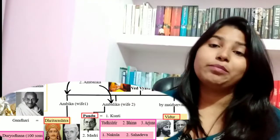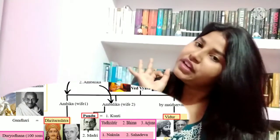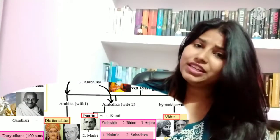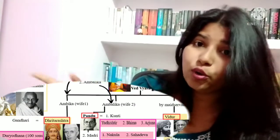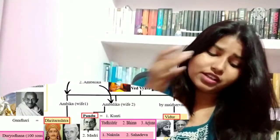Pandu — that is Subhash Chandra Bose — had two wives: Kunti and Madri. From Kunti he has three children: Yudhishtir, Bhim, and Arjun. From Madri he has Nakul and Sahadev. The characters of all five Pandavas were discussed in the first video. Vidur's children have no significant reference. That was the Great Indian family you need to know in order to start reading this story.